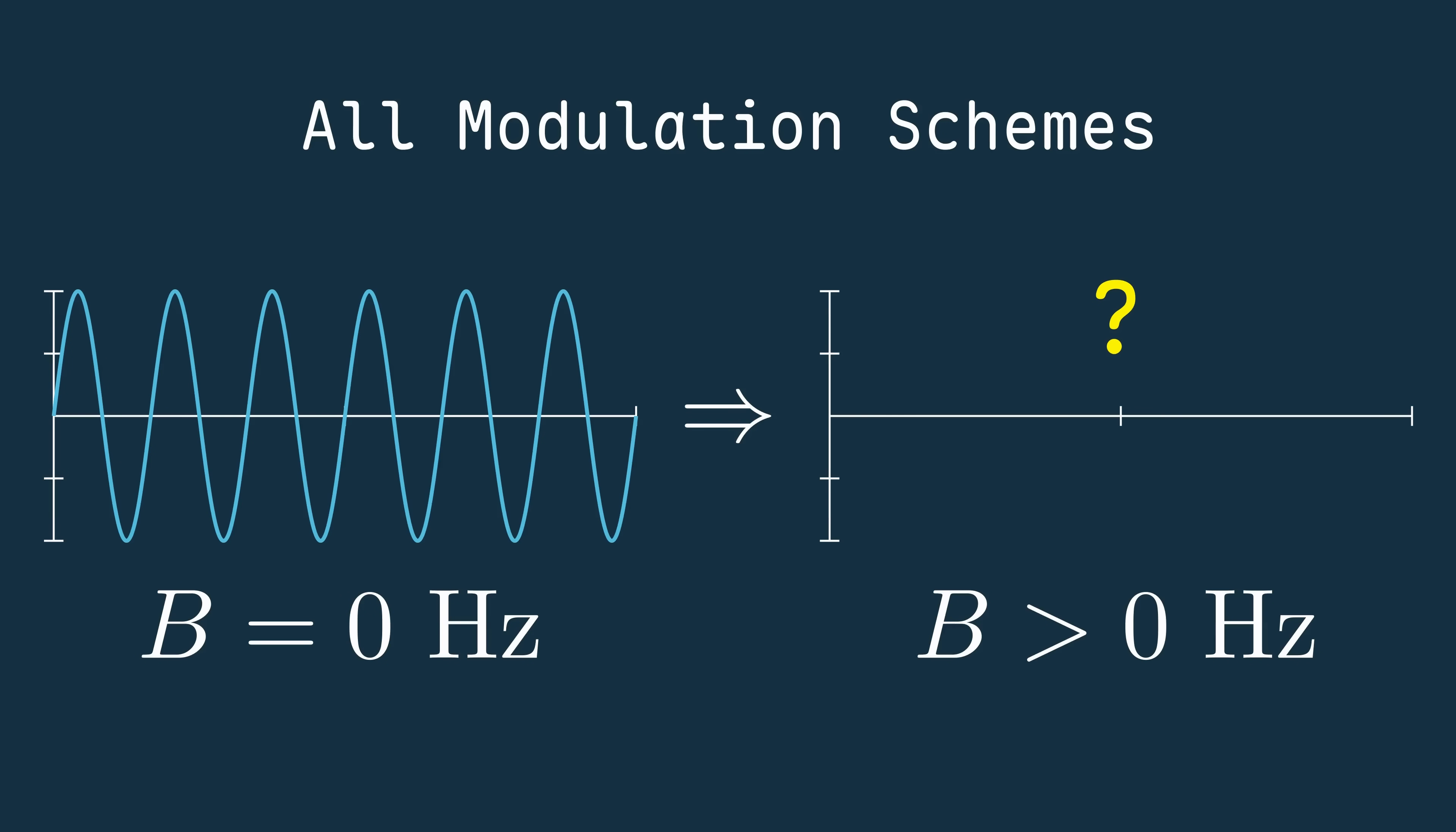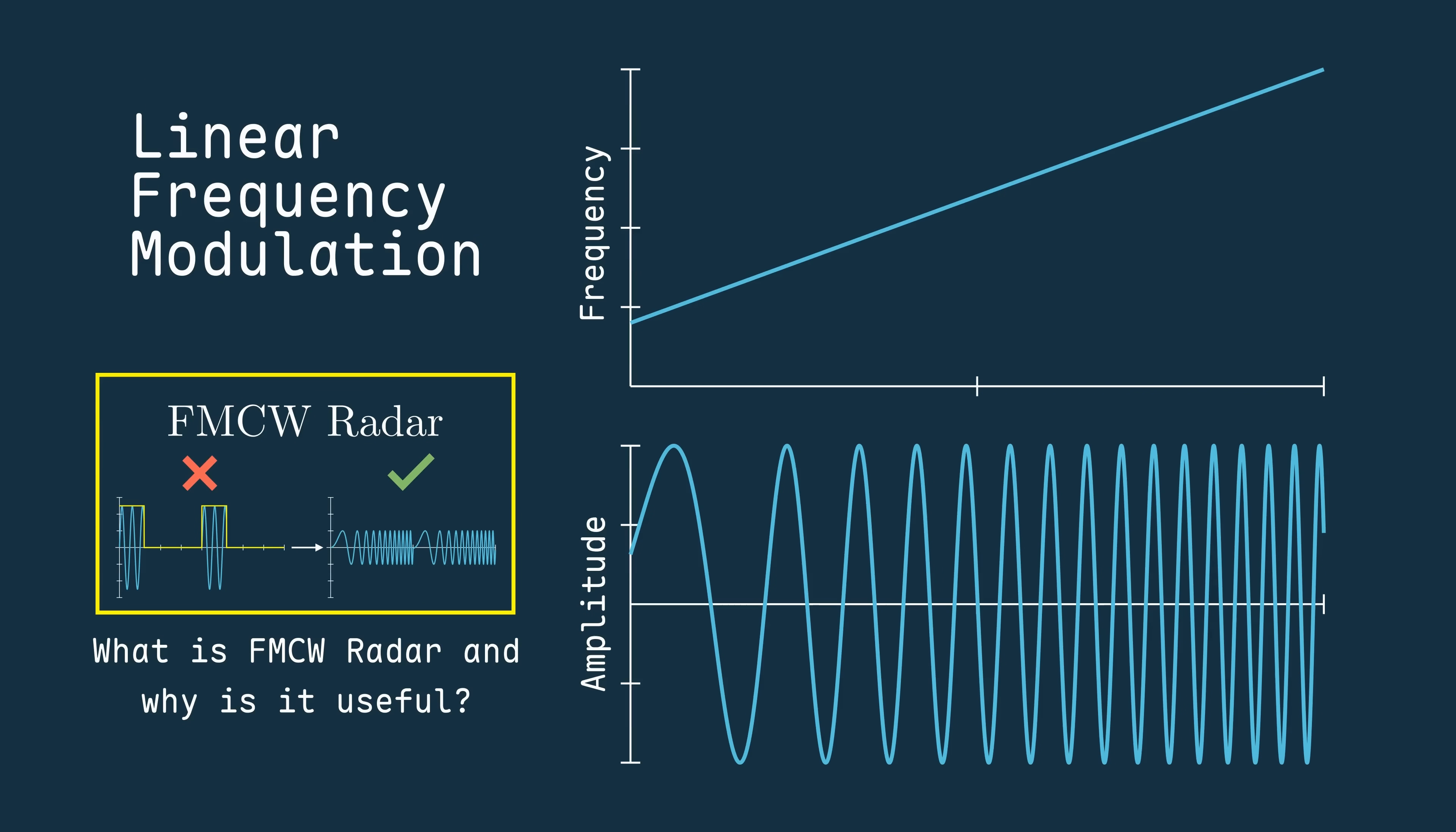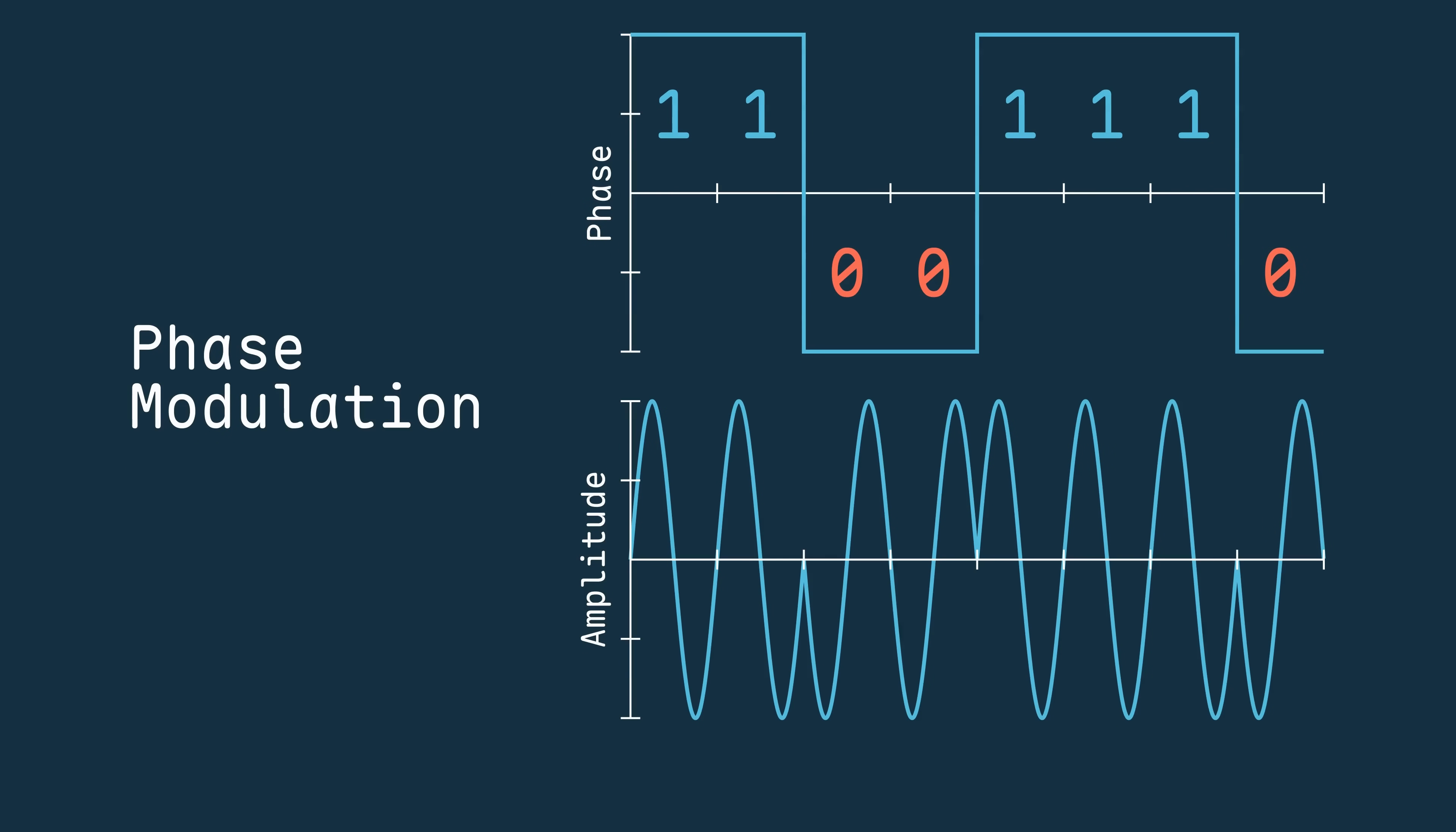The introduction of non-zero bandwidth is obvious in the case of linear frequency modulation, because you're changing the actual signal's frequency over time.